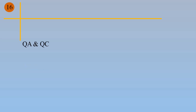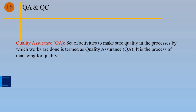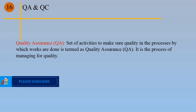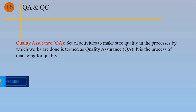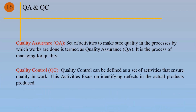Point 16: QA and QC. Quality Assurance (QA) is a set of activities to make sure quality in the processes by which work is done. It is the process of managing for quality. Quality Control (QC) can be defined as a set of activities that ensure quality in work. These activities focus on identifying defects in the actual products produced.